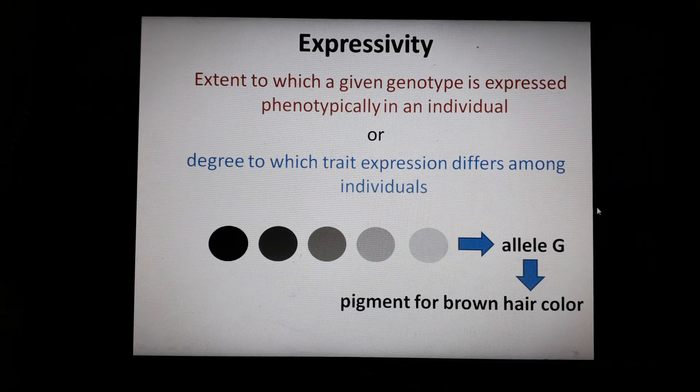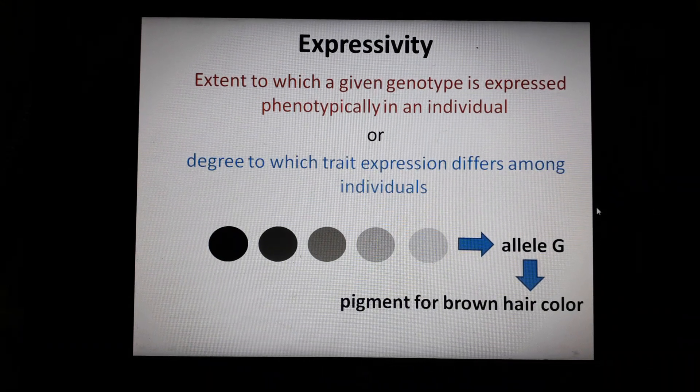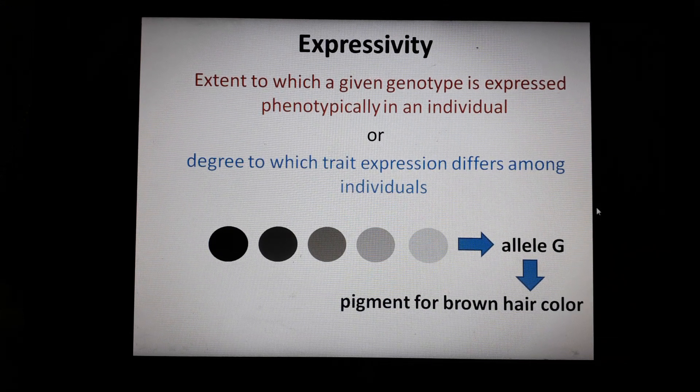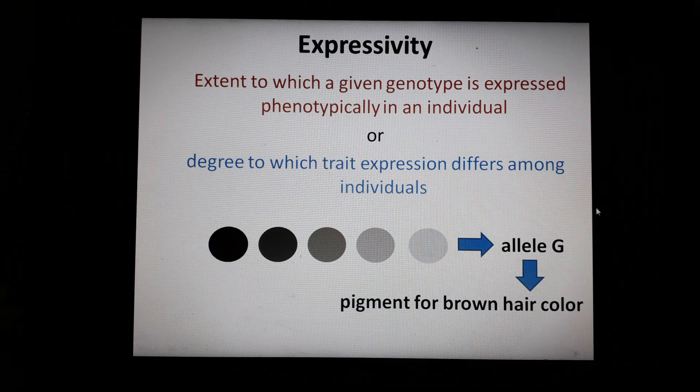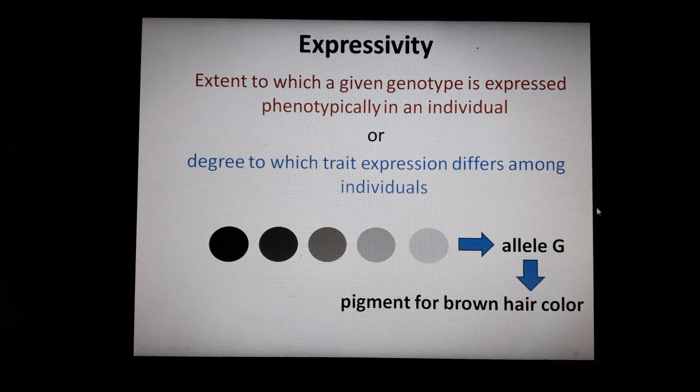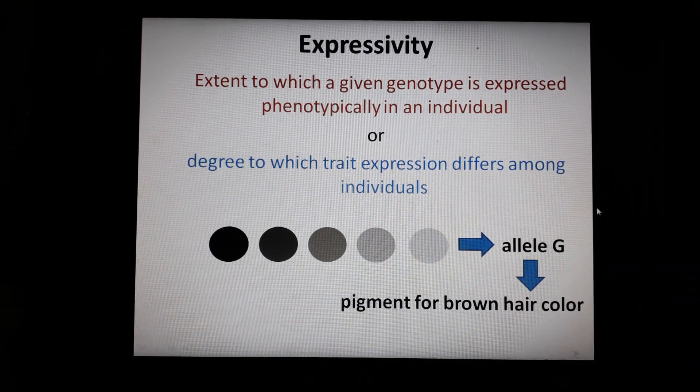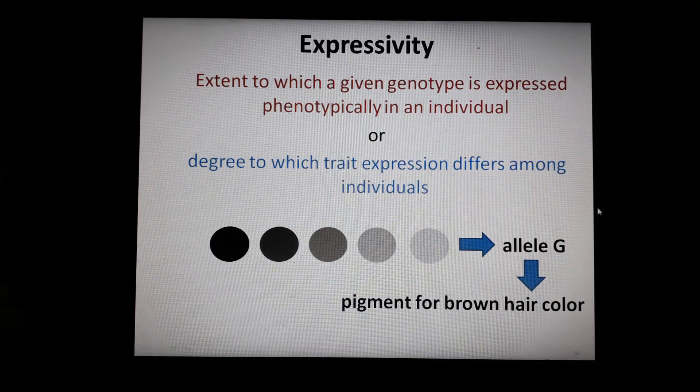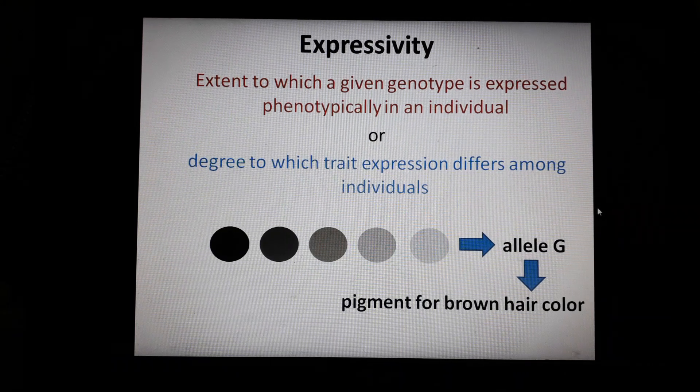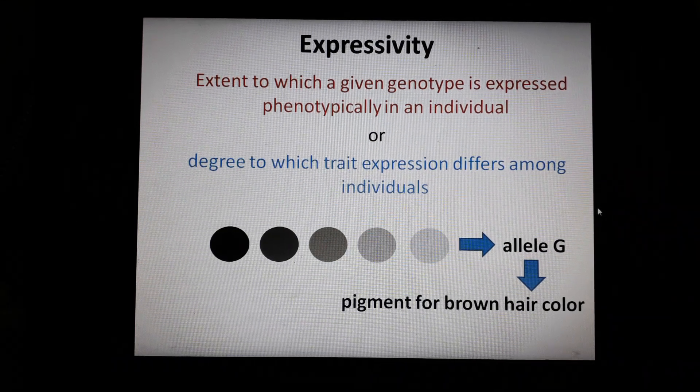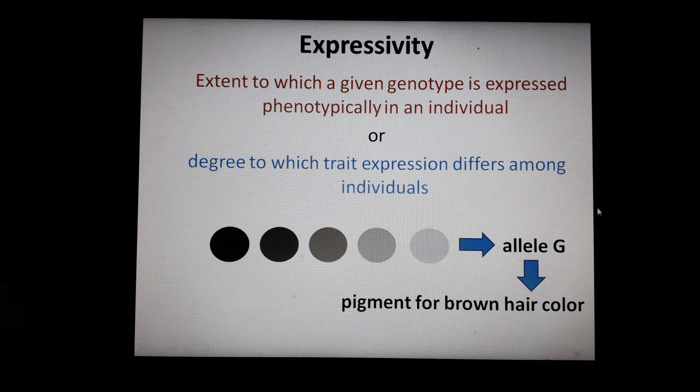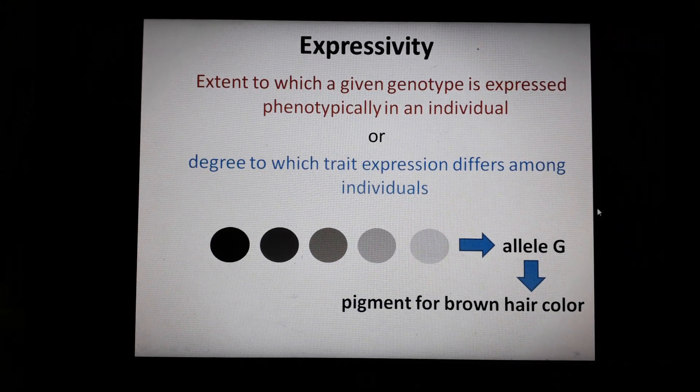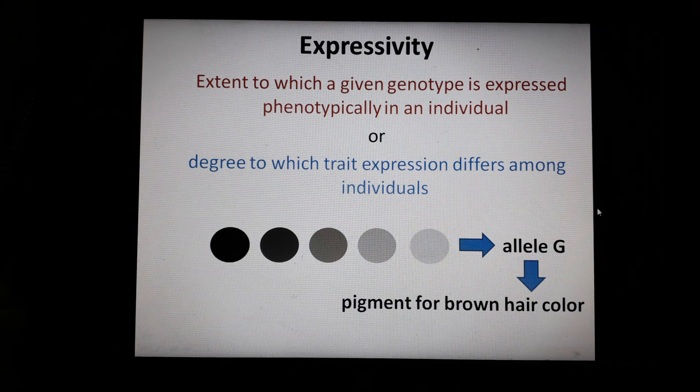To understand this definition more clearly, let's take an example. You know that human beings have brown hair color in different shades. Some people have dark brown hair, some have light brown, similarly some people have ginger brown. The pigment for brown hair color is coded by allele G. Now if we link this example with the expressivity definition, how can you define it?